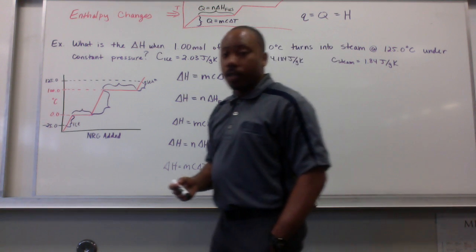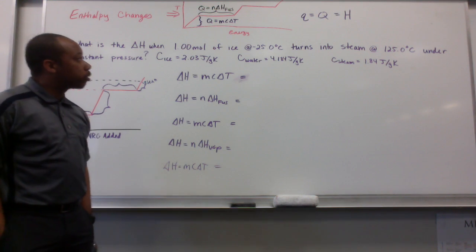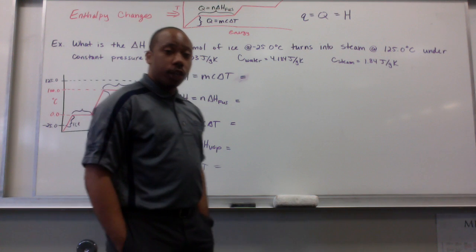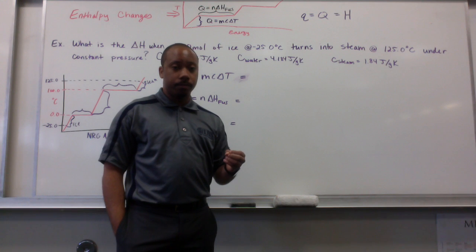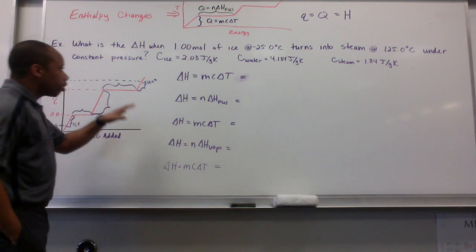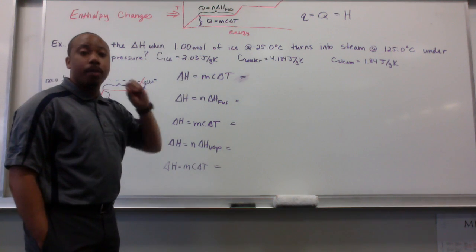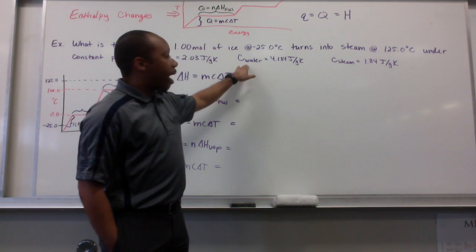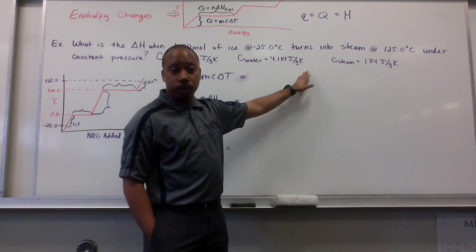So, let's look at an example. It says, what is the change in enthalpy when 1.00 moles of ice at negative 25 degrees Celsius turns into steam at 125 degrees Celsius under constant pressure? Now, it's important to note here that our specific heat capacities of ice, water, and steam are different from one another. We learned that the specific heat capacity of water is 4.184 joules per gram Kelvin.